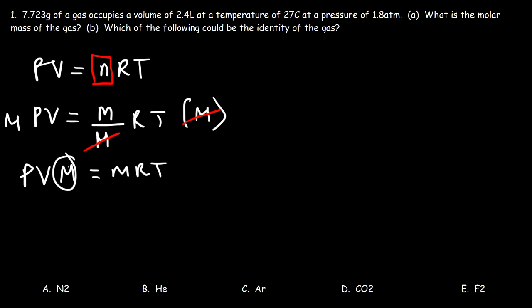Now to isolate the molar mass, we got to divide both sides by PV. So the molar mass is equal to MRT divided by PV.